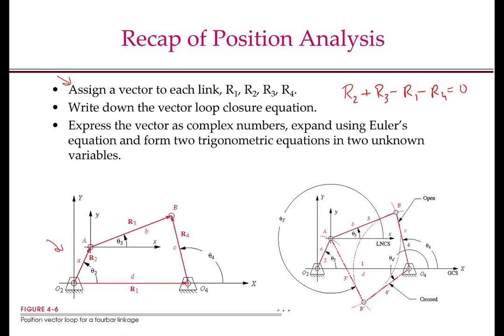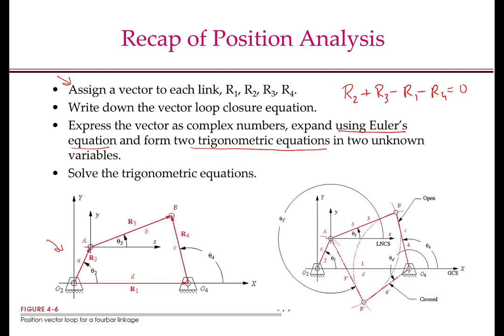Then we express each one of the vectors in complex exponential form. We expand them using Euler's equation and form two trigonometric equations in two unknown variables. For example, R2 is a·e^(jθ₂), where a is the length of vector R2 and θ₂ is the angle made by O2A with the positive x-axis, measured anticlockwise. Similarly, R3 equals b·e^(jθ₃). Once we have the two trigonometric equations, we can solve them using the methods discussed in class.